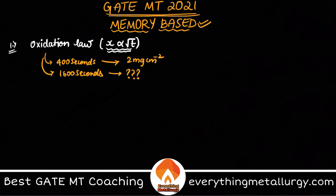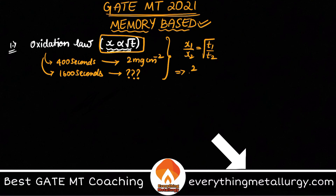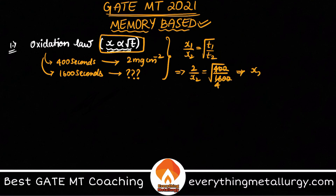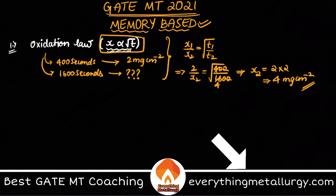They asked: if you perform the same oxidation for 1600 seconds, what would be the weight gain? The formula is x₁/x₂ = √(t₁/t₂). So x₁ = 2, x₂ = unknown, t₁ = 400 s, t₂ = 1600 s. This gives x₂ = 2 × √4 = 2 × 2 = 4. Straightforward oxidation law question.